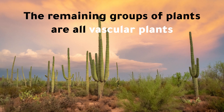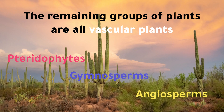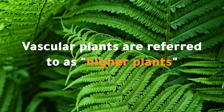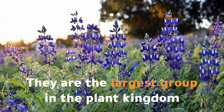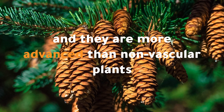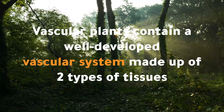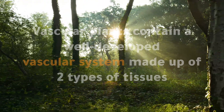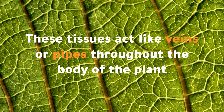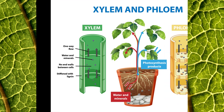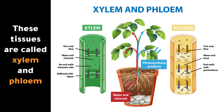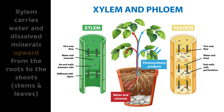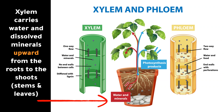The remaining groups of plants are all vascular plants. Vascular plants are referred to as higher plants. They are the largest group in the plant kingdom, and they are more advanced than non-vascular plants. Vascular plants contain a well-developed vascular system made up of two types of tissues. These tissues act like veins or pipes throughout the body of the plant and are called xylem and phloem. Xylem is used for water and mineral conduction, carrying water and dissolved minerals upward from the roots to the shoots.